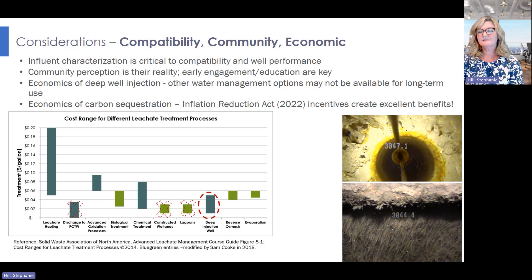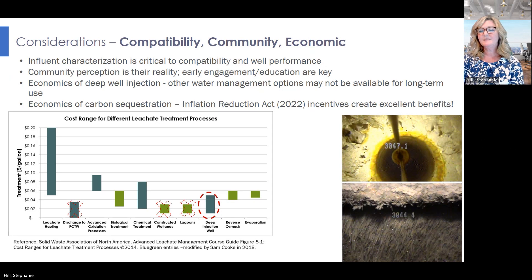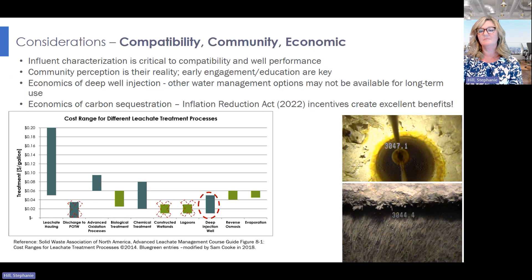The second consideration is community engagement. People want to know what's going on in their community, and if we don't proactively educate them with the correct information, they'll seek it out from their own sources — whether right, wrong, or otherwise. Perception is reality, so early engagement could eliminate a major schedule interruption.